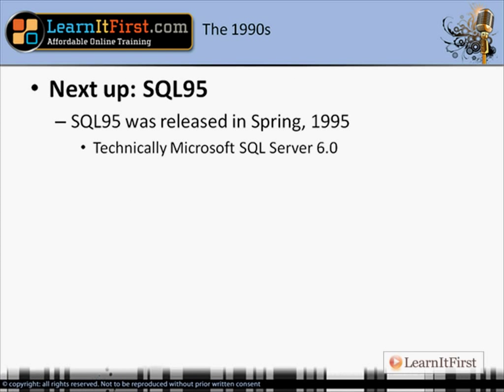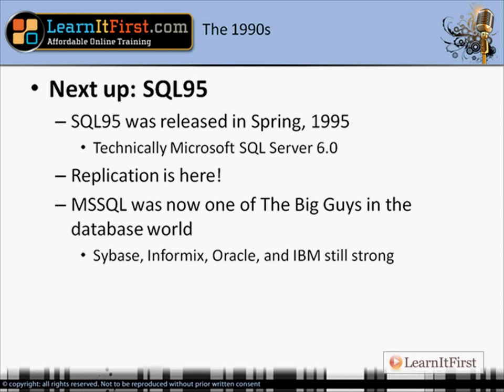The next spring after the split, Microsoft came out with SQL Server 6.0. We skipped version 5 and went straight from 4.2 to 6.0. This was also called SQL 95, to coincide with Windows 95. This release brought in replication. By this point in the timeline, Microsoft was one of the big players in the database world — one of the top database platforms out there, even if they didn't have the largest market share. And Ashton Tate was notably absent.